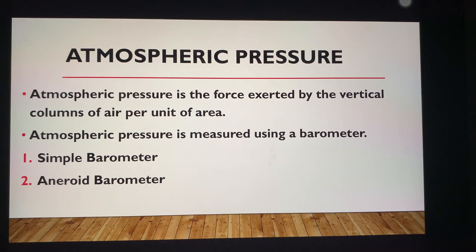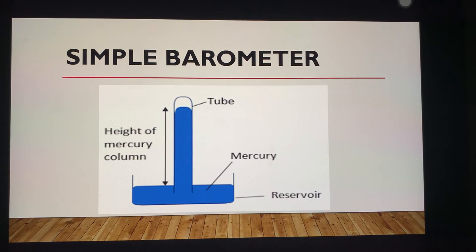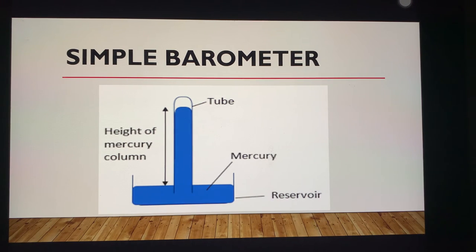Atmospheric pressure is measured using a barometer, which was invented by Galileo and his assistant Torricelli in 1643. The barometer is divided into two parts: the simple barometer and the aneroid barometer. A simple barometer basically consists of a long glass tube filled with mercury. It is sealed at the upper end and open at the lower end because it is in an inverted form. The lower end is inverted into a bowl of mercury whose surface is exposed to the air. When air pressure pushes up the mercury in the tube, the reading is recorded from the scale on the glass tube.